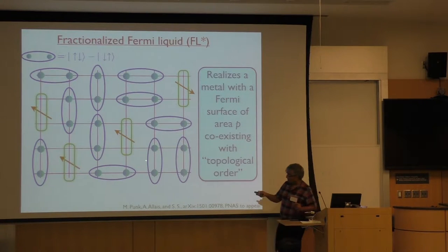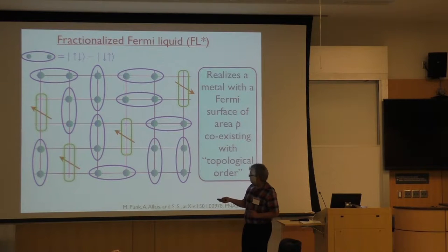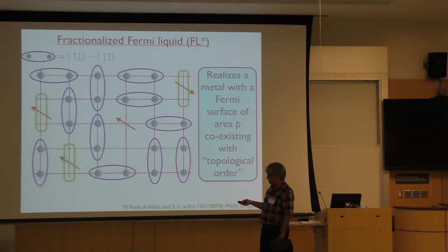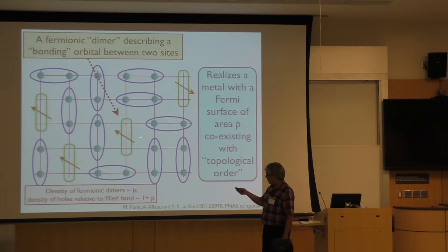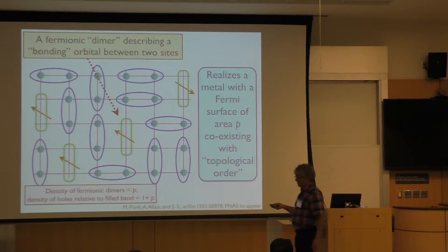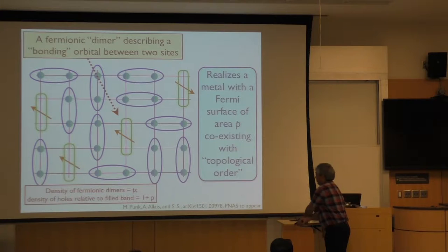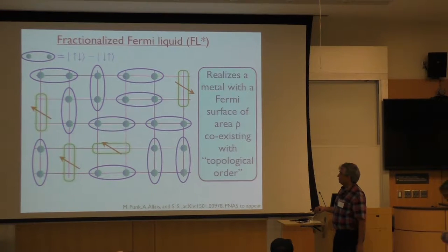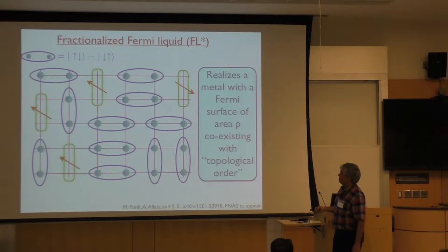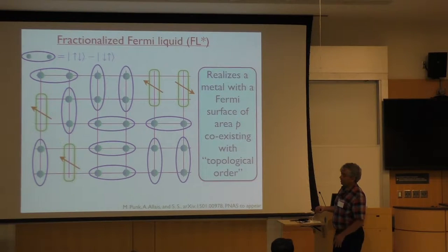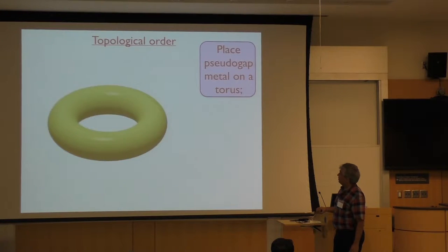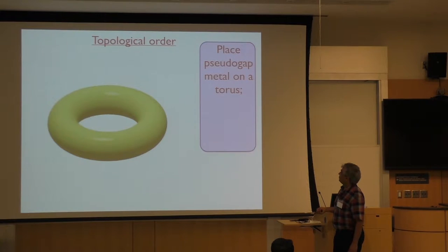So this is a state where the hole has formed a bound state — it's sitting there and there — and that whole combination is my green dimer, originally orange on the board. Now these green guys can move around in this complicated dance with the blue dimers. As they move around, they just behave almost like free fermions of spin one-half and charge E.